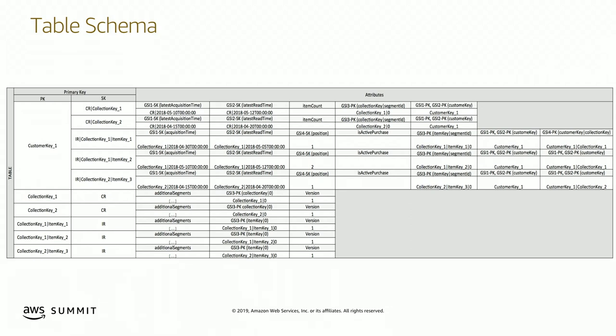Here is the schema for this table. It looks like a lot at first, but if you've been following the series, you know we like to build things as single tables — putting multiple types of items on the same table. We build partitions representative of the entities in our relationship model and fill those partitions with items that denote one-to-many and many-to-many relationships. The first partition is the customer partition, which contains collection items and item records.